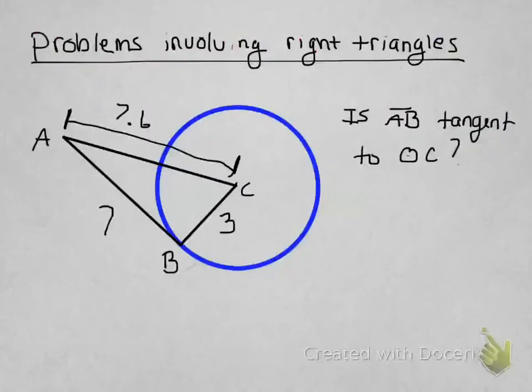So here's a problem that has you figuring out if a line is tangent. The question says, is AB tangent to circle C? And you should look at this and see that this kind of looks like a right triangle. But is it a right triangle?